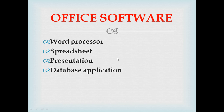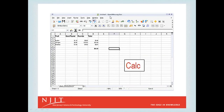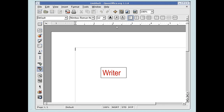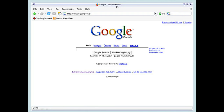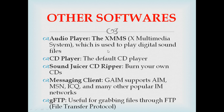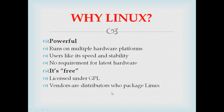From the applications menu you can access office software including a word processor, spreadsheet, presentation, and database application — for example OpenOffice Writer for documents. For internet browsing there is Mozilla Firefox. Other software includes the XMMS audio player for playing digital sound files, a CD player, Sound Juicer CD ripper, a messaging client, and gFTP for FTP transfers.